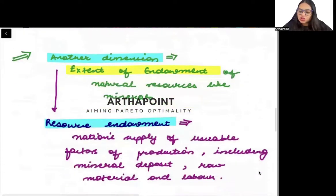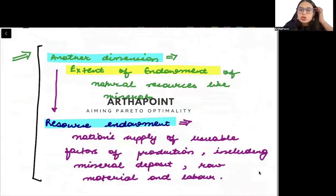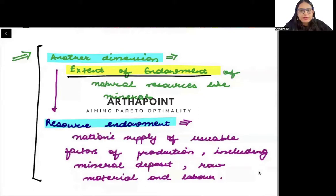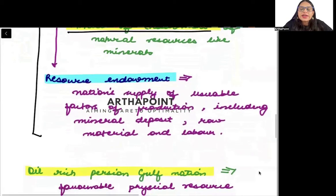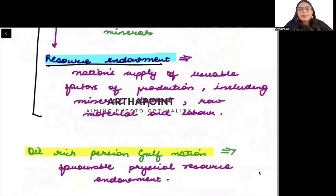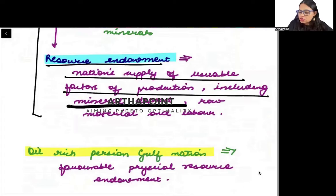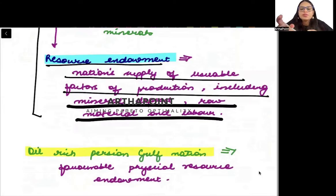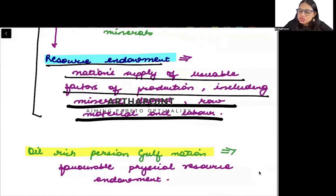Another important dimension is the amount of resources a country owns. Countries which usually have more natural resources and minerals tend to be developed countries. We define this as resource endowment — a nation's supply of usable factors of production, including raw materials, minerals, and other renewable and non-renewable resources. Nations with more resource endowment will usually be developed nations.